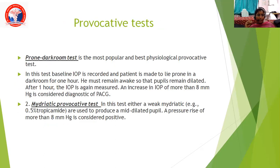Provocative tests for angle closure glaucoma include the prone dark room test, which is the most popular and best physiological provocative test. The baseline IOP is recorded and the patient lies prone in a dark room for one hour, remaining awake so that the pupils remain dilated. After one hour, IOP is again measured. An increase of more than 8 mmHg is considered diagnostic of primary angle closure glaucoma. The other test is the mydriatic provocative test, using a weak mydriatic like 0.5% tropicamide to produce a mid-dilated pupil; a pressure rise of more than 8 mmHg is considered positive.